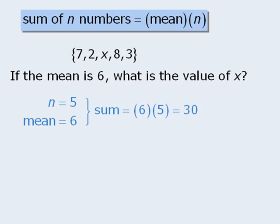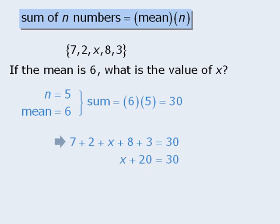If the sum of the five numbers is 30, we can now write the following equation. When we solve this equation for x, we get x equals 10, so the mystery number here is 10.